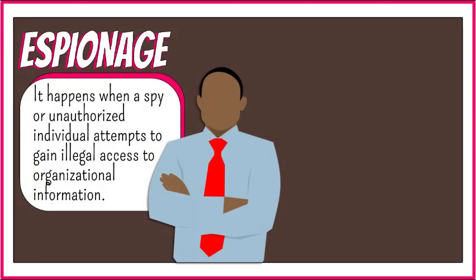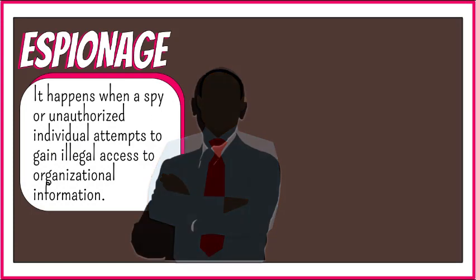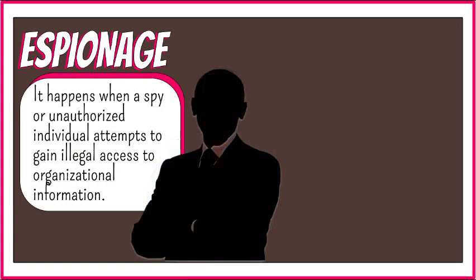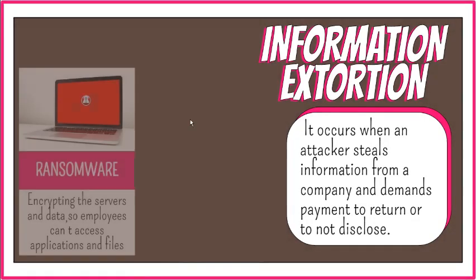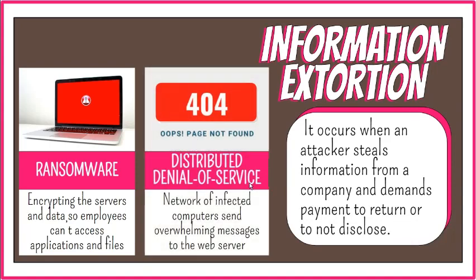Espionage happens when a spy or unauthorized individual attempts to gain illegal access to organizational information, such as their plans and activities, upon the order of a competitor. Information extortion occurs when an attacker steals information from a company and demands payment to return or not disclose the information. This often takes the form of ransomware and distributed denial-of-service attacks, both of which could paralyze the organization.